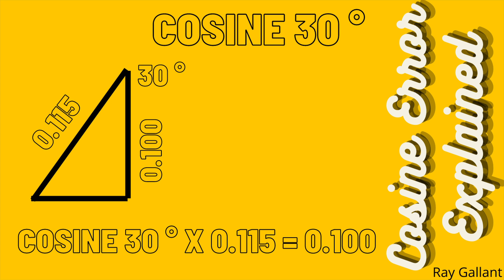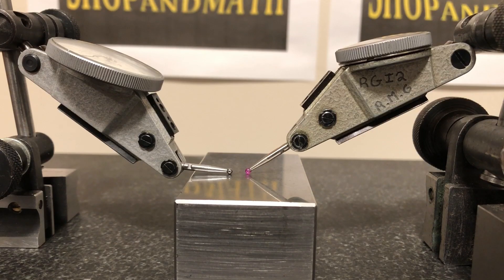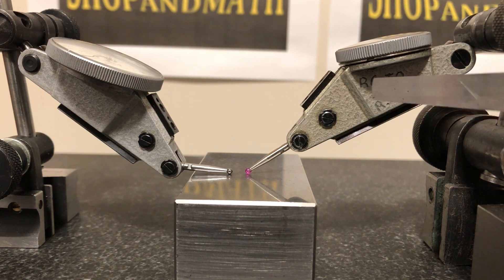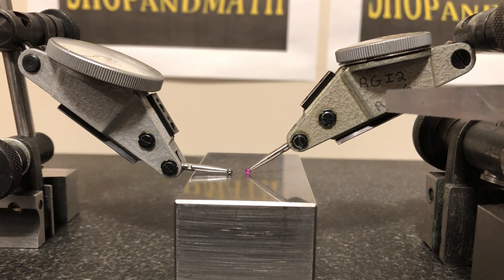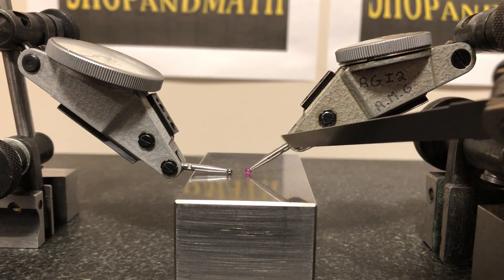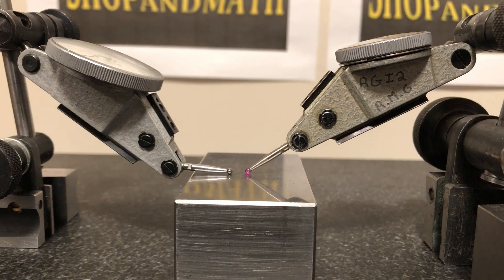Now let's try a demonstration with the dial test indicators or finger indicators. Both bodies of the indicator are at 30 degrees. The one on the right hand side has the tip at 30 degrees and the one on the left hand side is at about five degrees.